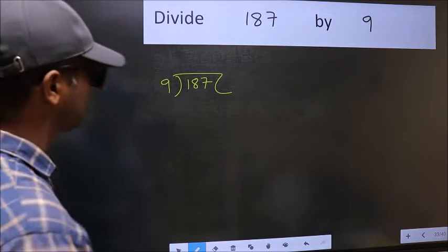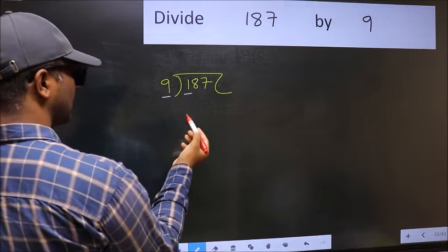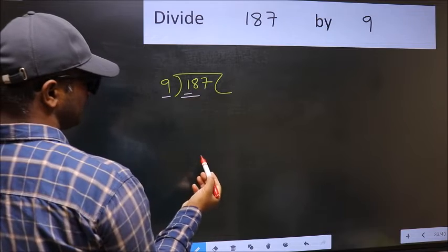Next. Here we have 1 and here 9. 1 is smaller than 9. So, we should take two numbers, 18.